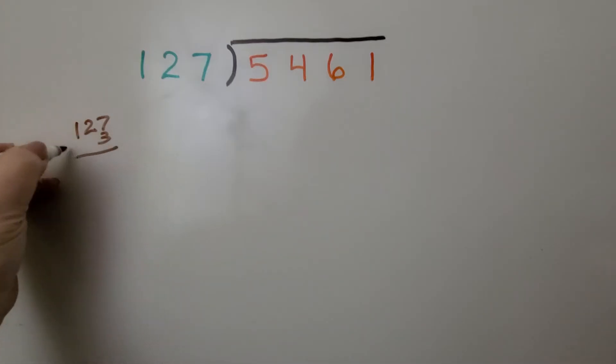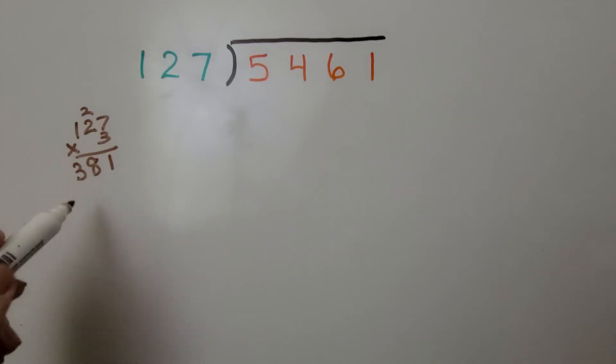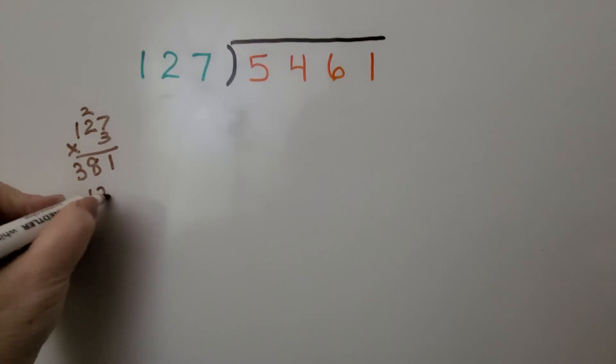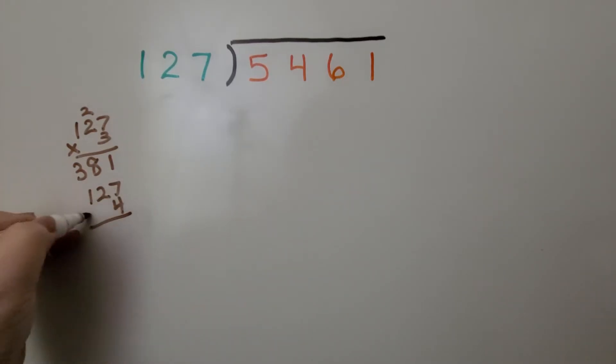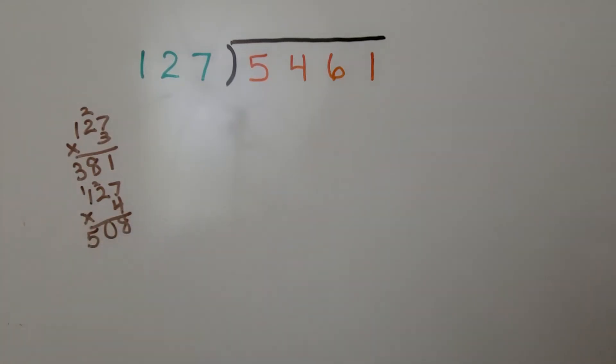What if we had 3 of them? 127 times 3 is 381. I think we can get another 127 in there. If we try 127 times 4, that's 508. And I don't think we're going to fit another 127 in there to be 546. So I'm going to go with 4.